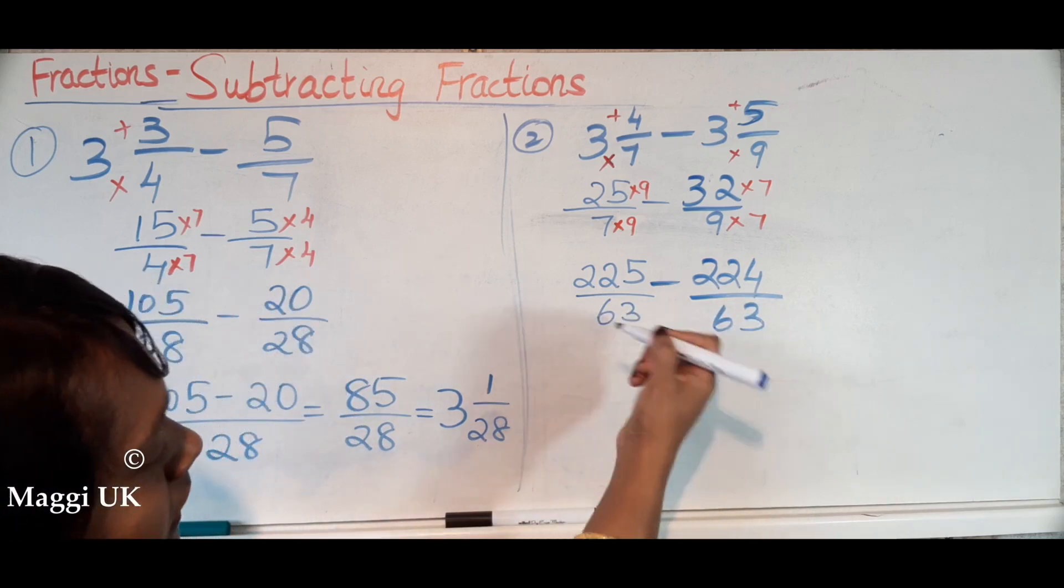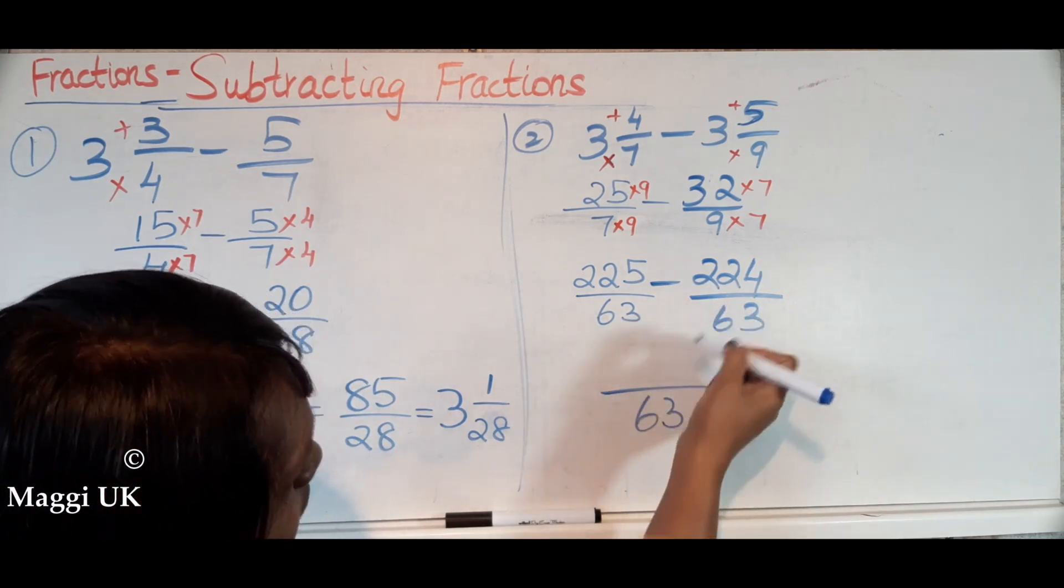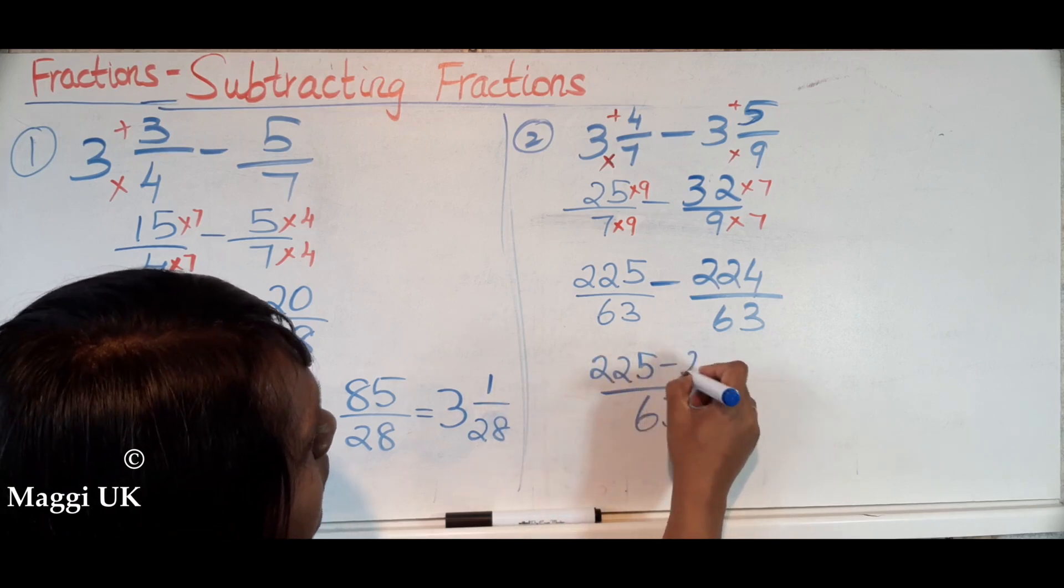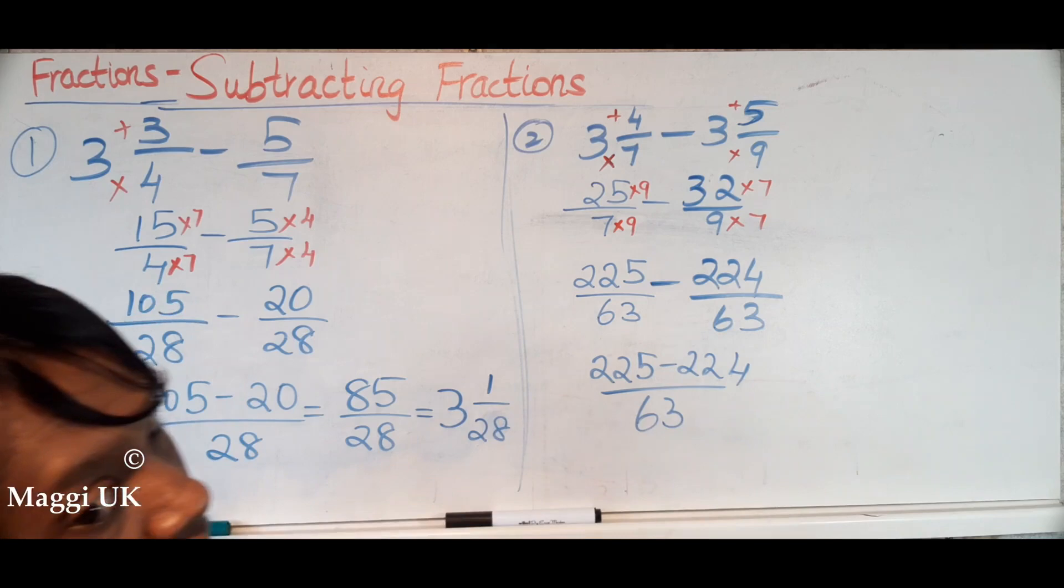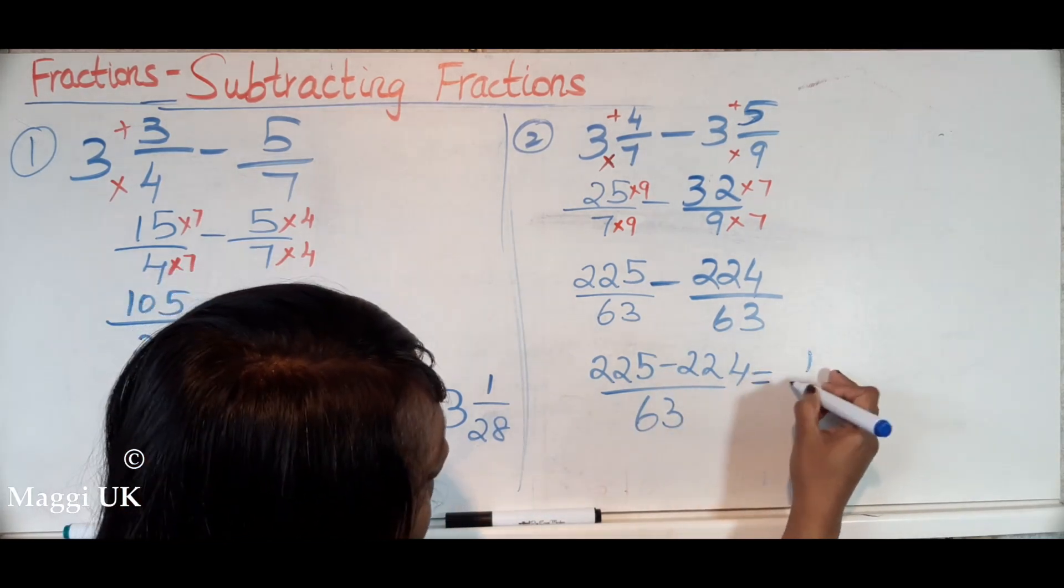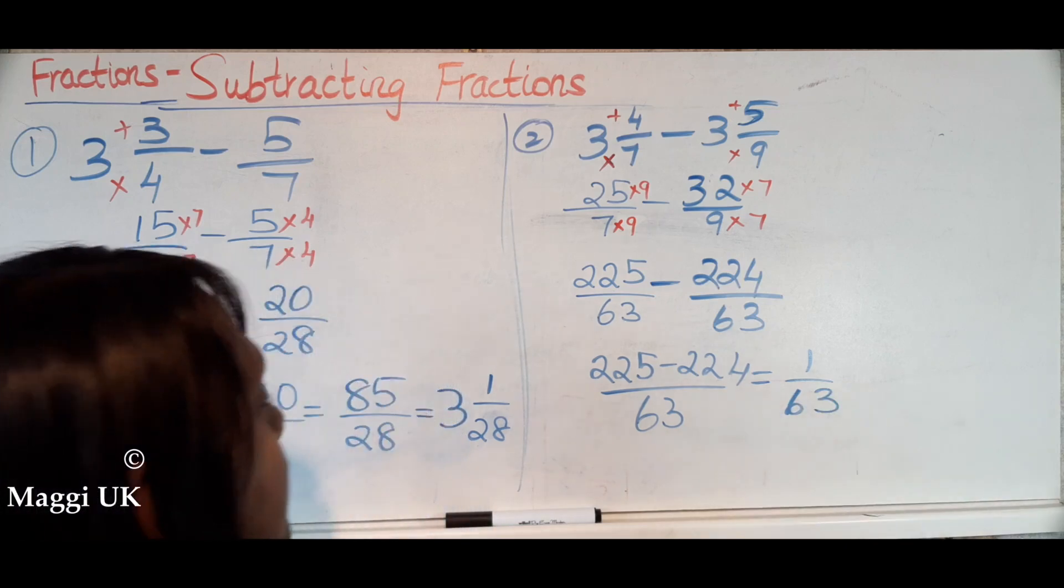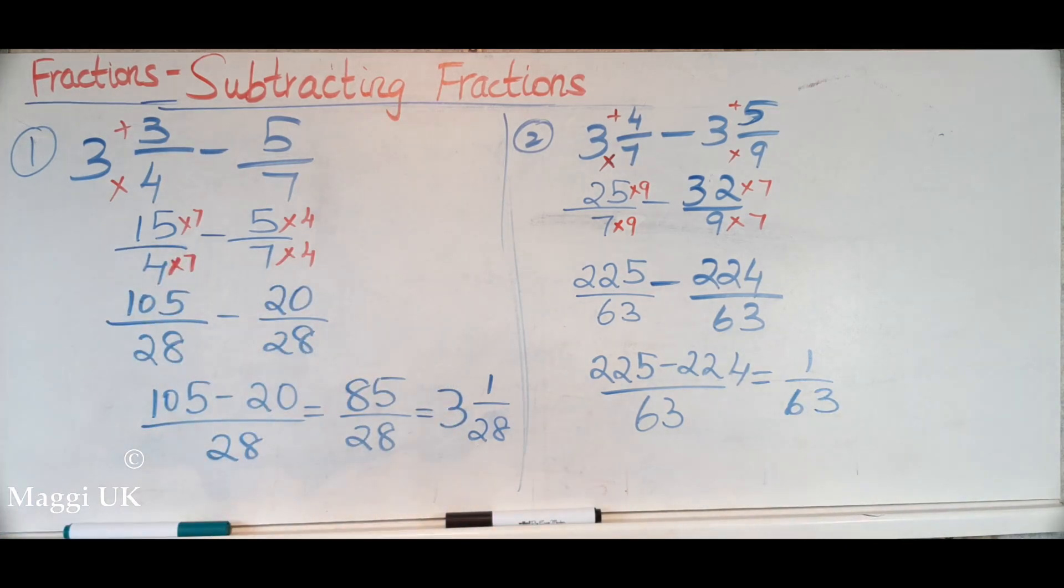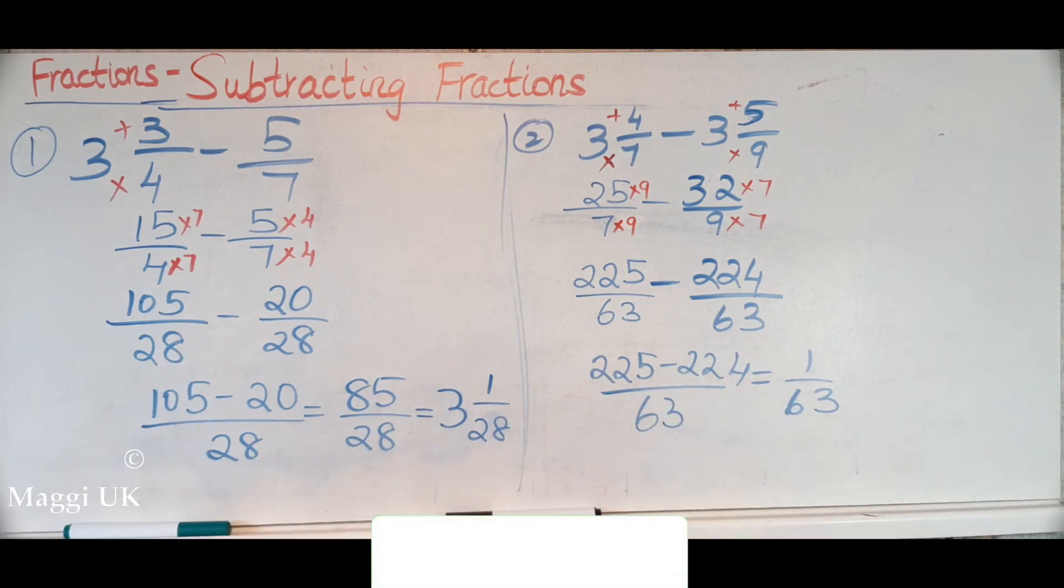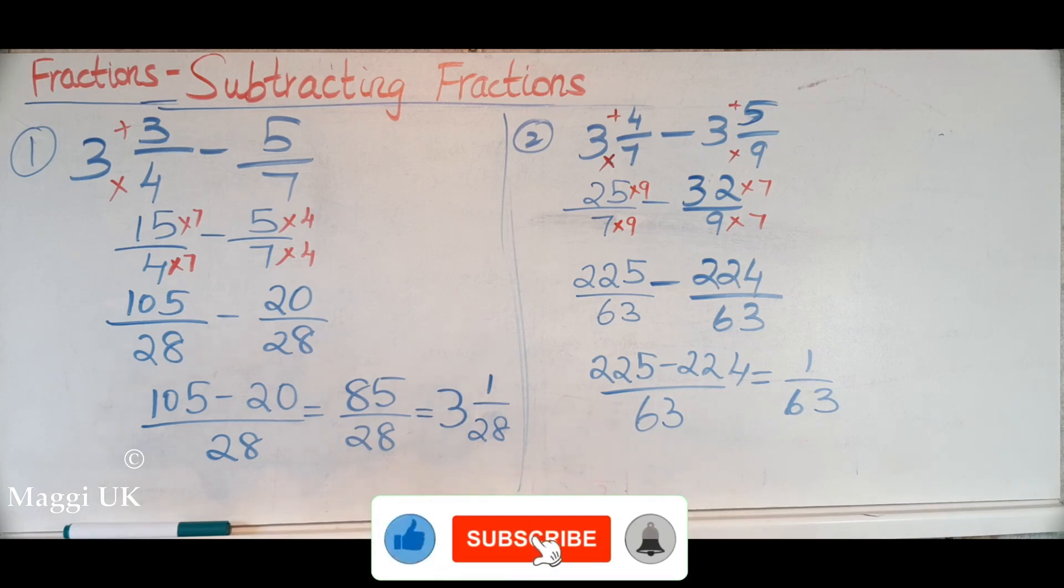Take away 224, that's very easy to take away. 1 over 63. This one we can't bring it back to mixed number because we already have one, which is your numerator, smallest number, denominator a bigger number. Well done boys.